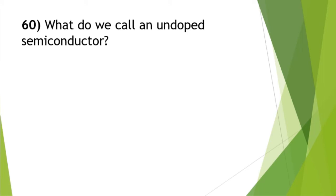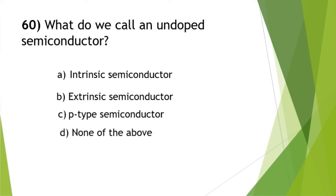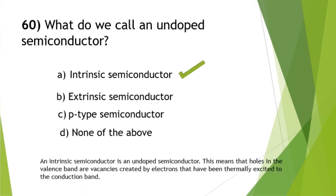What do we call an undoped semiconductor? This is a very important portion from the semiconductor section of your 12th standard NCERT textbook. Doping means the addition of impurities, so an undoped semiconductor is called an intrinsic semiconductor. Holes in the valence band are vacancies created by electrons that have been thermally excited to the conduction band.